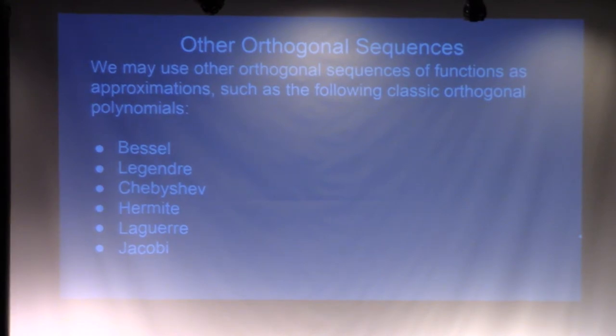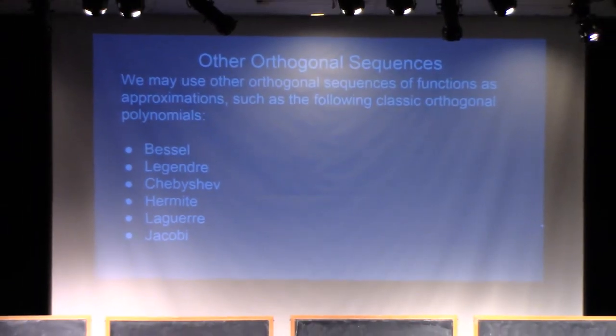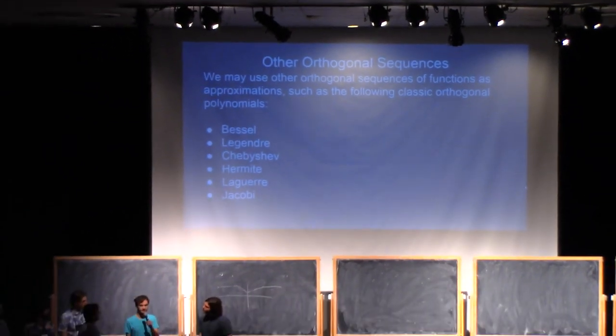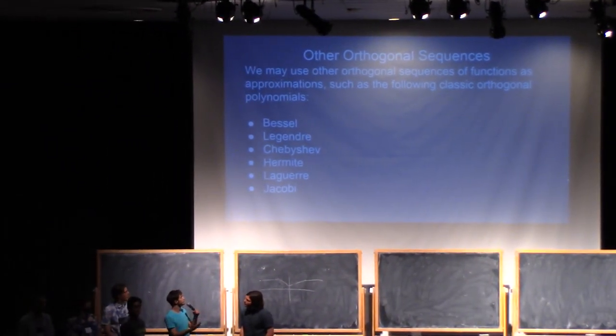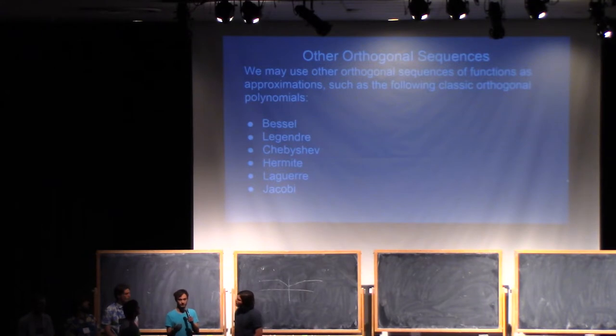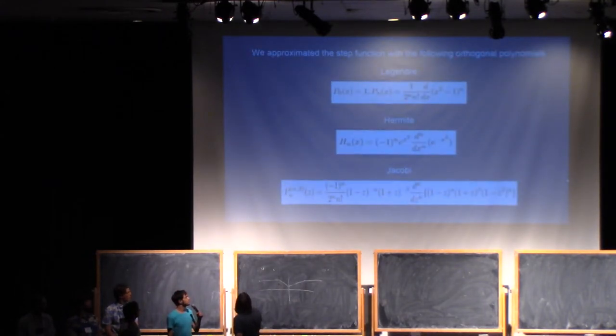All right, so one of the things that you can also ask is that you can try to approximate functions using other complete orthogonal bases, and so on the slide up here, we have an example of some polynomial orthogonal bases that you can use. And so we looked at three of them, Legendre, Hermite, and Jacobi polynomials. These are the three Rodriguez formulas for all of them.